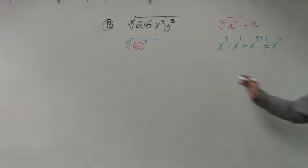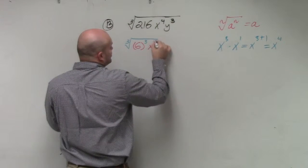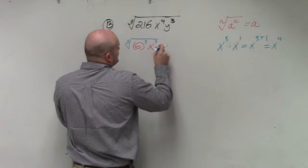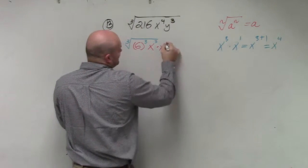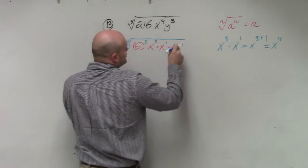So I can rewrite this as x cubed times x to the first power, and then times y cubed.